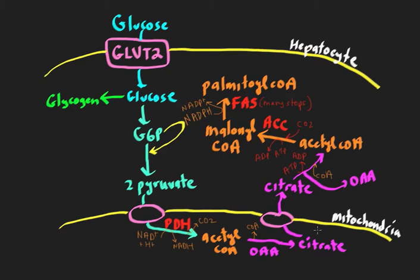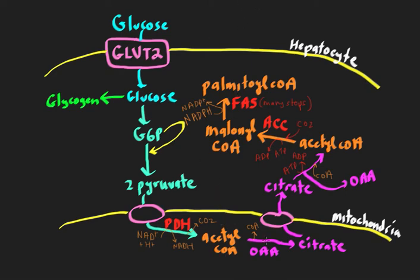Fatty acid synthesis is occurring in the cytosol. This malonyl-CoA molecule, which is the product of the rate-limiting step of fatty acid synthesis — acetyl-CoA carboxylase — has a very important role in regulating fatty acid oxidation. The malonyl-CoA made during fatty acid synthesis will help turn off the entry of fatty acids into the mitochondria, which is what we want. We don't want to be making fatty acids and then have them go into the mitochondria where oxidation occurs. And if acetyl-CoA carboxylase is turned off in the fasting state, malonyl-CoA goes down, causing incoming fatty acids to enter the mitochondria and be oxidized.